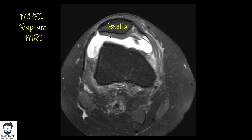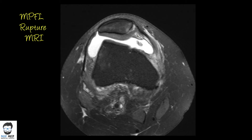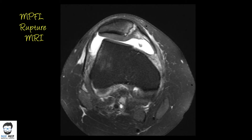Looking at the axial views, that's your patella with patellar cartilage. On the lateral side, the lateral femoral condyle is higher than the medial femoral condyle, so the patella is sitting a little bit lateral — it's tilted laterally as you can see. There is a lot of edema, and you can see a little bit of cartilage coming off the bone — so it's an impaction fracture of the medial condyle. This structure here is your MPFL, and you can see it's ruptured from its patellar attachment.